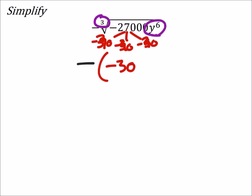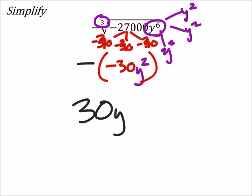I've got the cube root of that, and y would split up into y squared, y squared, and y squared. So if I multiply those together I'd get y to the sixth. So this is negative 30y squared, but it's the negative of that, so the opposite of the negative leaves us with 30y squared.